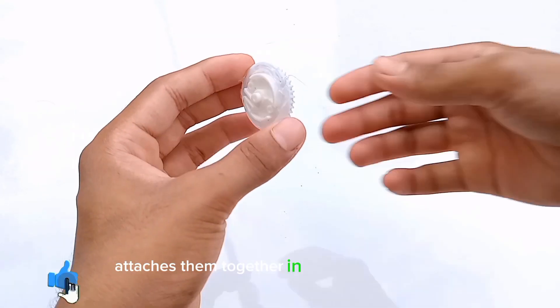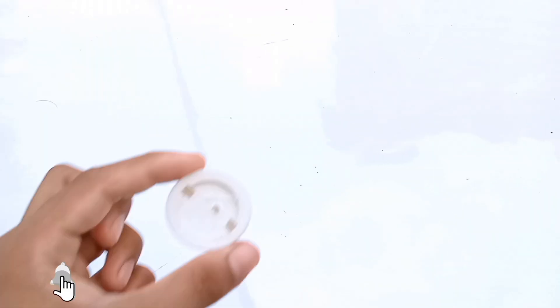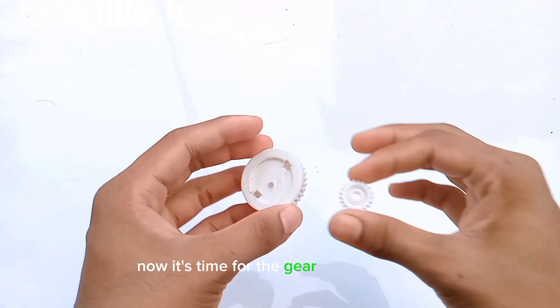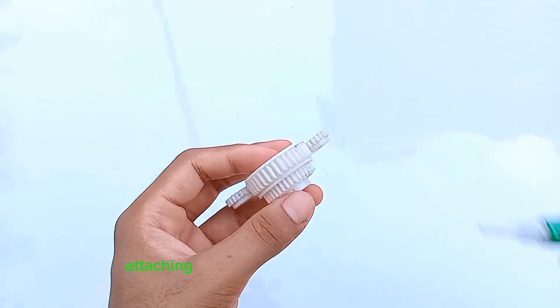Carefully attaches them together in the correct position. Now it's time for the gear contact points. For this, Sinan is using the larger gears, attaching one to each side of the Beyblade layer.